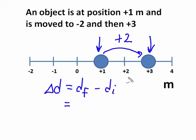Well, the final was plus three. And the initial is plus one. So, plus three minus plus one equals plus two meters.